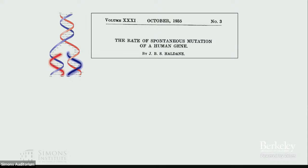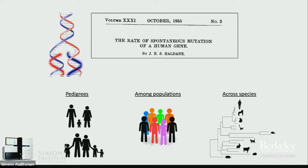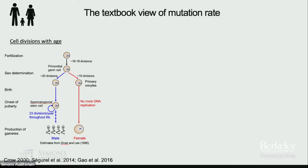The earliest estimates of mutation rate actually date back to the 1930s, even before it was appreciated that DNA is the hereditary material. Some seminal work done by Haldane measured the rate of hemophilia in families and tried to infer what the mutation rate might be. Today with large omics datasets, everything we know about mutation rate is being revised. There are large datasets now available for pedigrees — trios of father, mother, and child, or large families — data for thousands of different individuals, and also large amounts of data across different species.